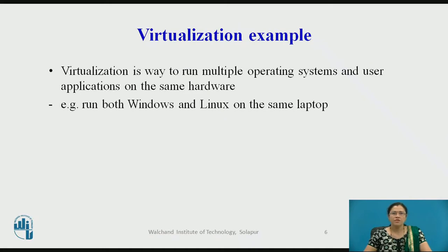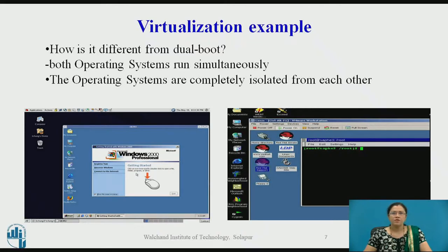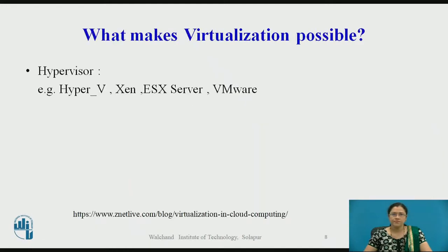Virtualization is a way to run multiple operating systems and user applications on the same hardware — for example, we can run both Windows and Linux on the same laptop. Unlike dual boot, both operating systems run simultaneously and are completely isolated from each other. The software that makes virtualization possible is known as a hypervisor, also known as a virtualization manager. It sits between the hardware and the operating system and assigns the amount of access that applications and operating systems have with the processor and other hardware resources.